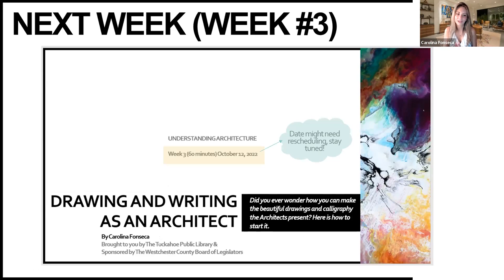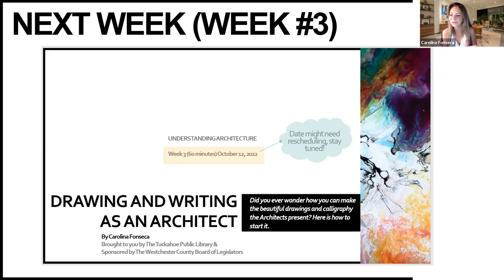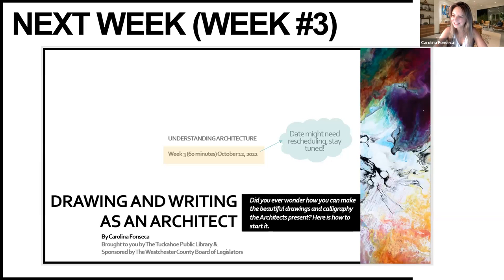Our next class — week number three — is supposed to be October 12th, but I have a calendar conflict. It will likely be October 25th and 26th, giving us enough time to come up with drawings about everything around our home. That class will be about drawing and writing as an architect — how we do the drawings, the calligraphy. Did you ever think about how architects all seem to have the same handwriting? We're going to understand that and practice.